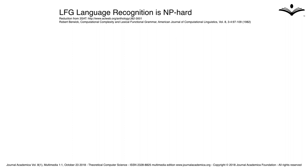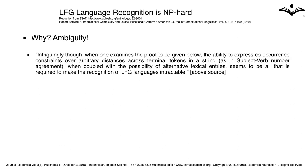LFG language recognition is NP-hard. The reduction is from 3SAT. The reason is ambiguity. The ability to express co-occurrence constraints over arbitrary distances across terminal tokens in a string — as in subject-verb-number agreement — when coupled with the possibility of alternative lexical entries, seems to be all that is required to make the recognition of LFG languages intractable.